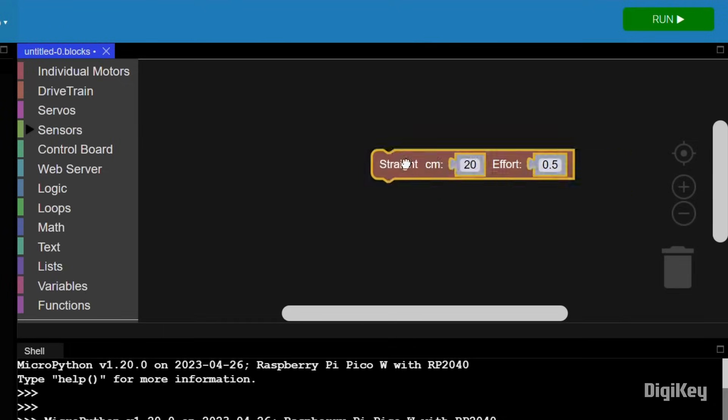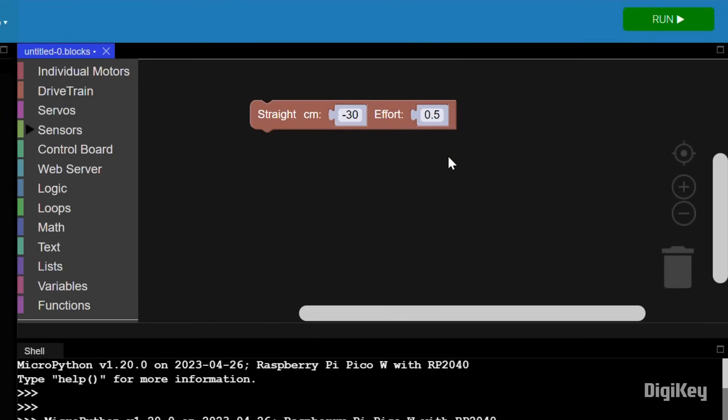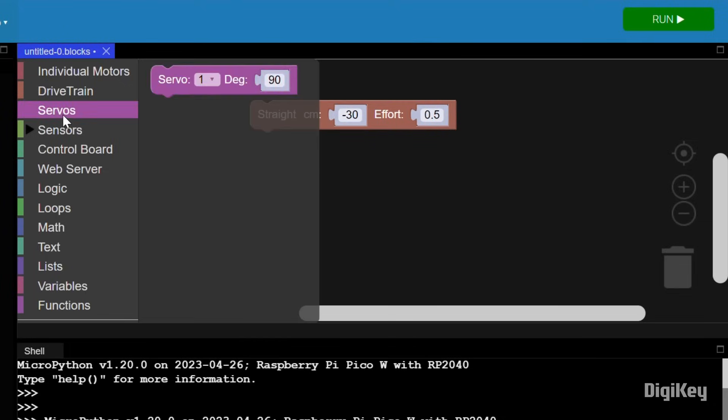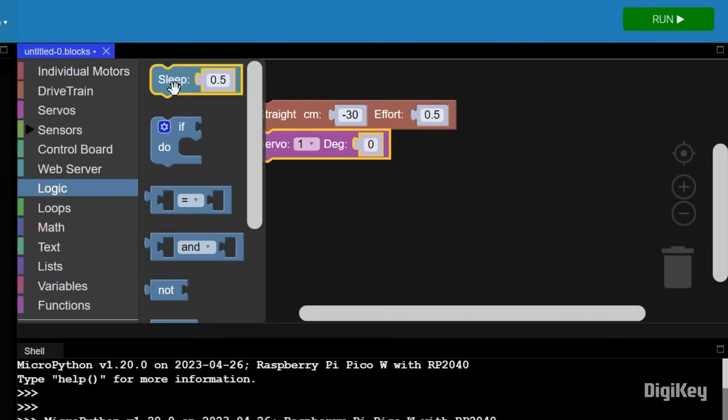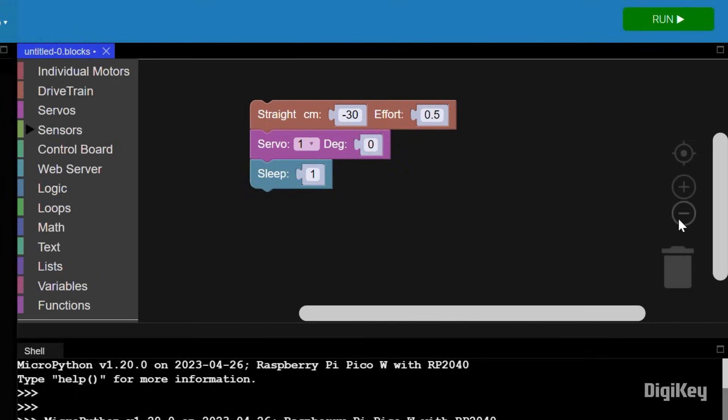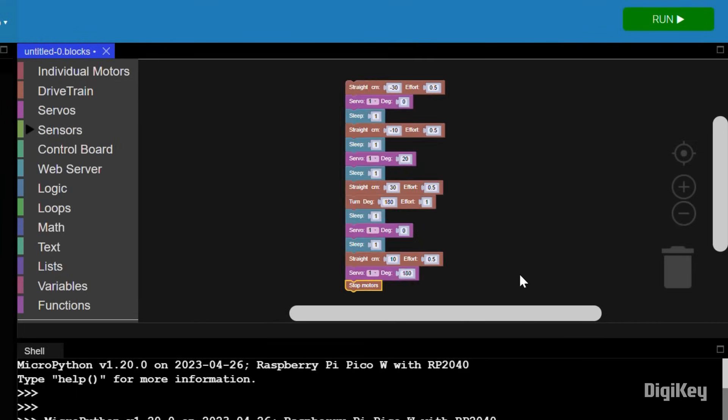Select a drivetrain command and choose a distance to travel. Select Servos and set it to the servo connection you're using and adjust the angle of rotation. And under Logic, select a sleep block to give the servo time to rotate.